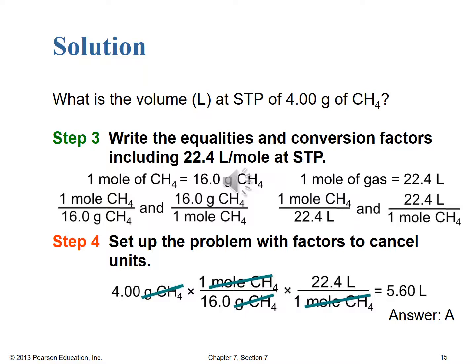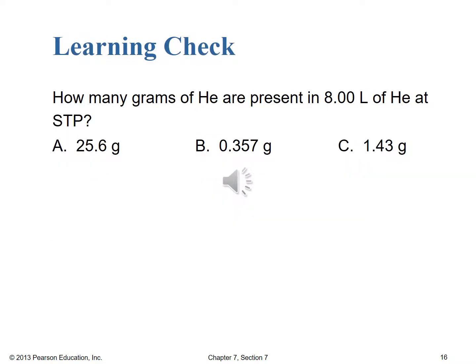We'll all get a chance to practice another learning check right now. This time the question is: how many grams of helium are present in 8.00 liters of helium at STP? Before, we had the mass of methane and had to find the volume — now we're given the volume and asked for the mass. Please pause the video while you work that. It will probably take a few minutes, and then when you're set, start it back up and we'll see if you selected the correct answer choice.